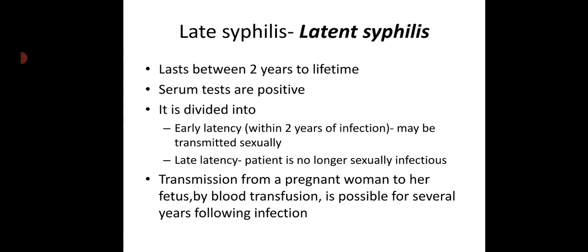Latent syphilis is divided into early latency — within 2 years of infection — which can be transmitted sexually, and late latency, where the patient is no longer sexually infectious. However, transmission from a pregnant woman to her fetus and by blood transfusion is possible for several years following infection.